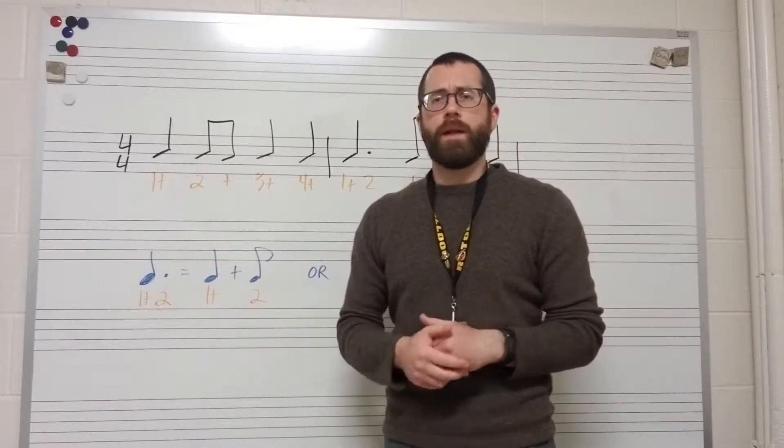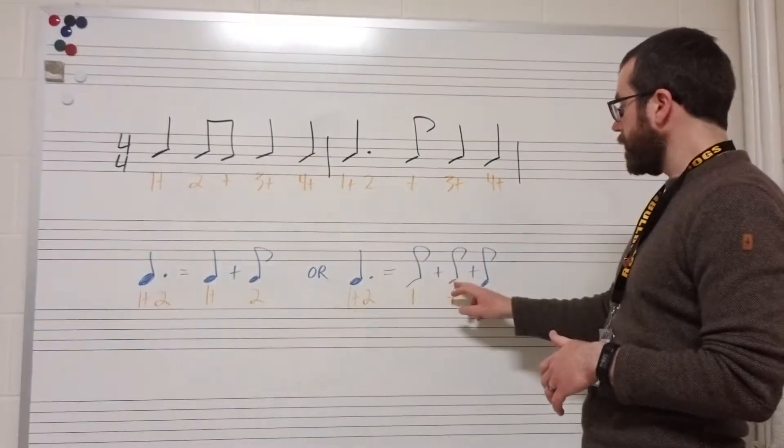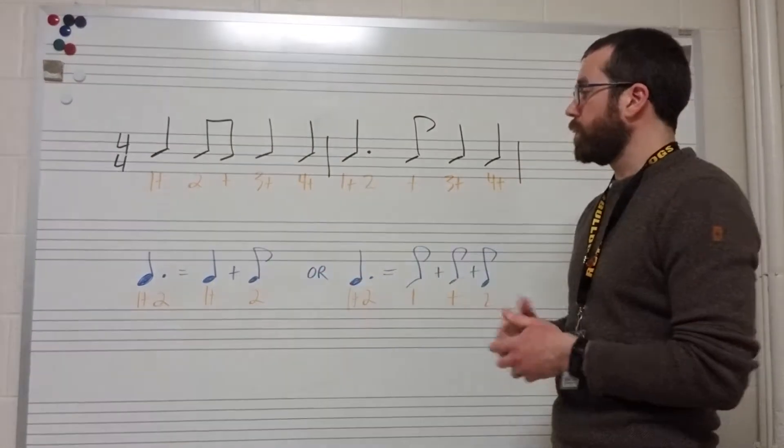Another way to think about it is a dotted quarter note is equal to three eighth notes. And so there's a couple of different ways that you can understand it.